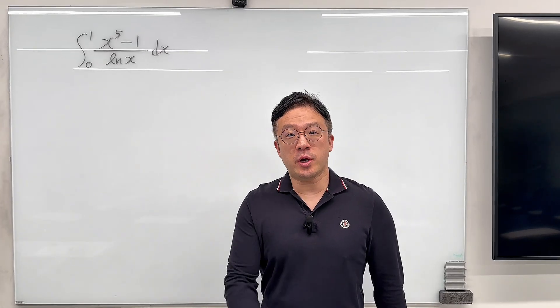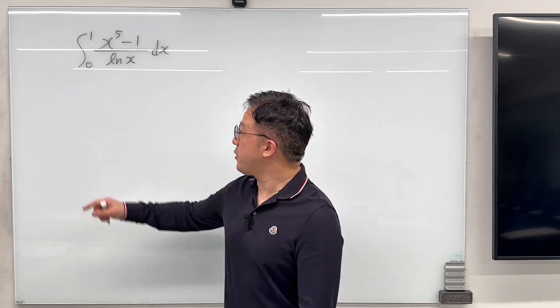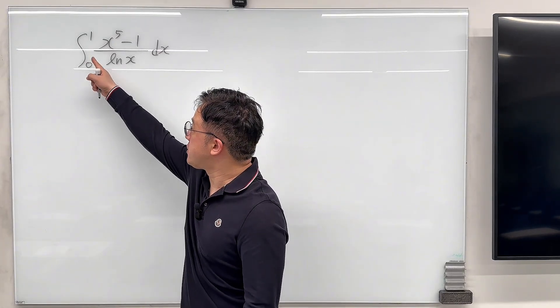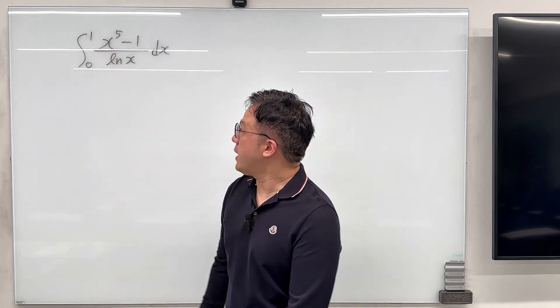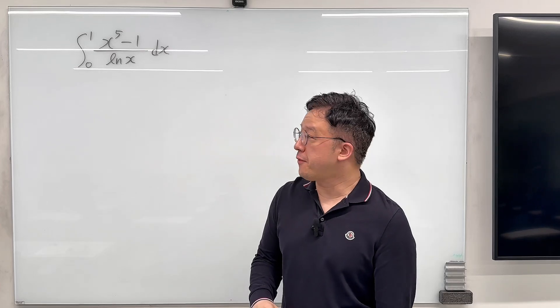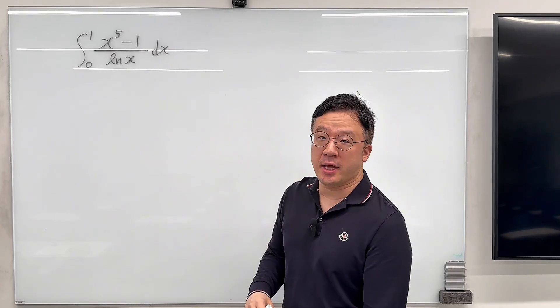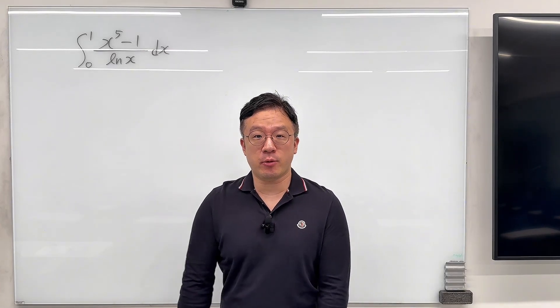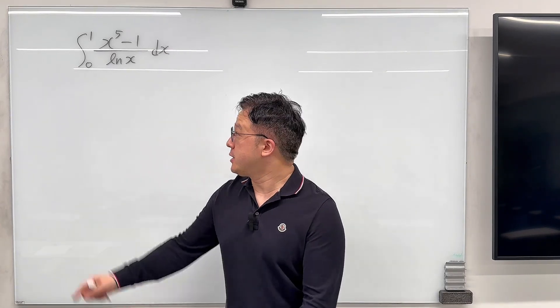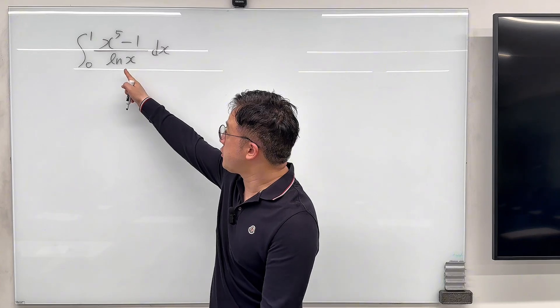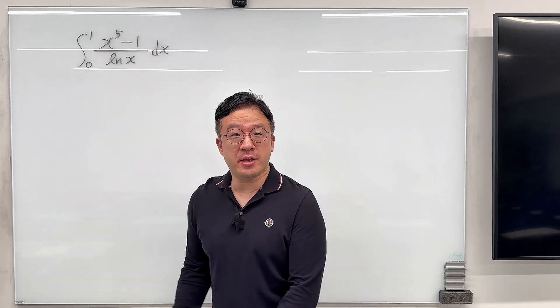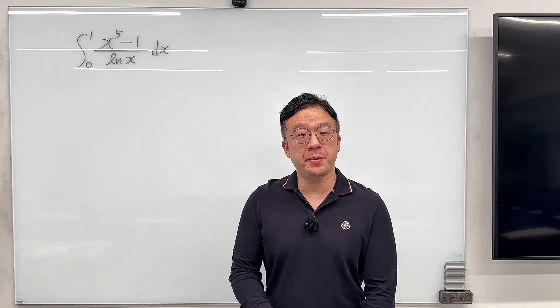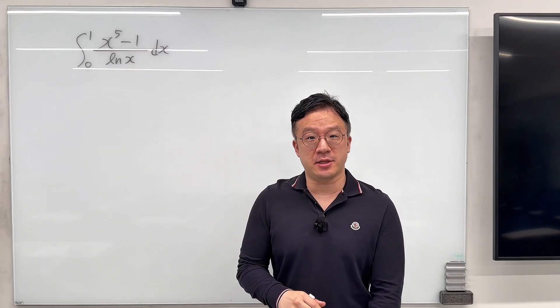Okay, here's the question. The question is the value of this integral from 0 to 1 of x to the power of 5 minus 1 over ln of x, dx. If you're using only basic integration skills, then this ln of x on your denominator might get on your nerve. So we'll be using Feynman's technique.